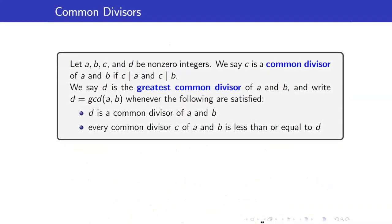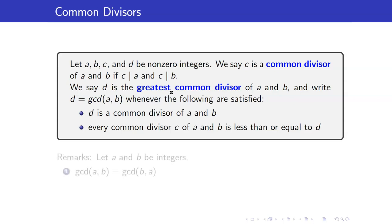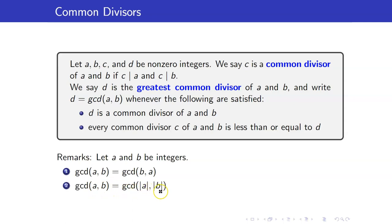Next, let us discuss common divisors. Suppose that we have four non-zero integers. We say that c is a common divisor of a and b if c divides a and c divides b. We say that d is the greatest common divisor of a and b, written as d = gcd(a, b), whenever: first, d is a common divisor of a and b; and second, every common divisor of a and b is less than or equal to d. Note that gcd(a, b) = gcd(b, a), and gcd(a, b) = gcd(|a|, |b|).